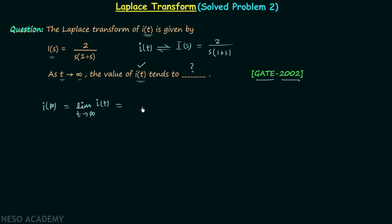According to the final value theorem, the final value of i(t) equals the limit as s tends to 0 of s multiplied by the Laplace transform I(s).